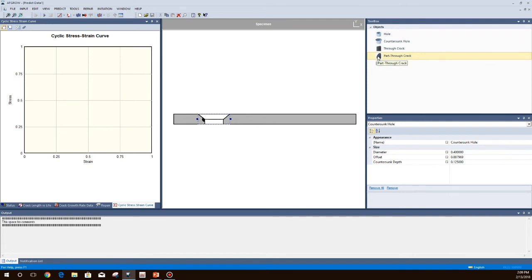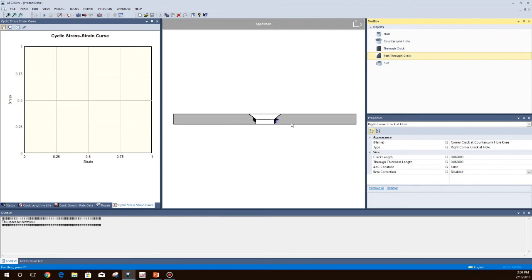When you add a second part through crack to the countersunk hole, the hole will automatically go to the center of the specimen and the cracks will become symmetric.